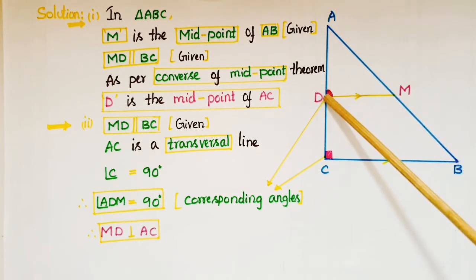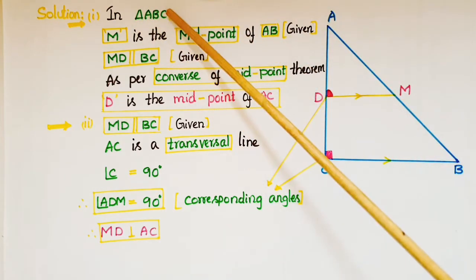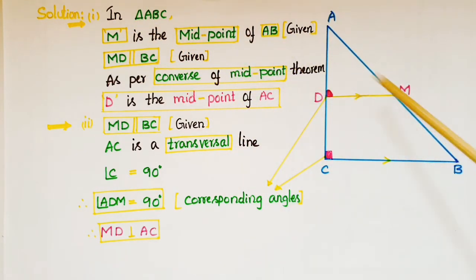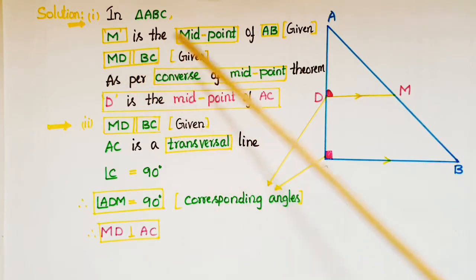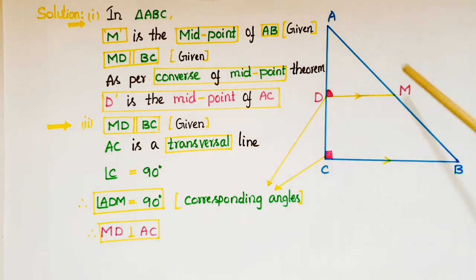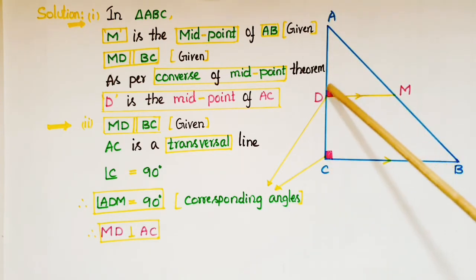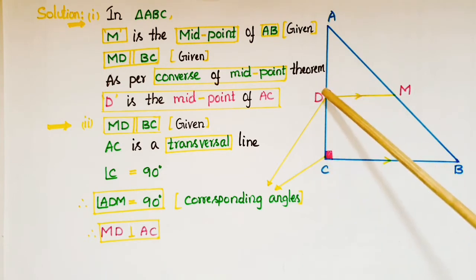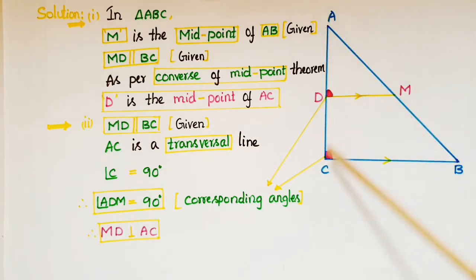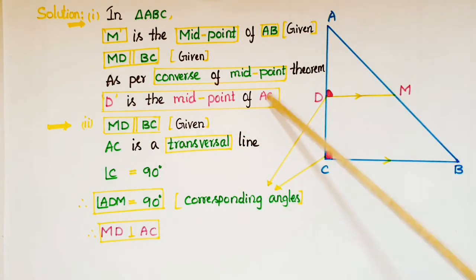We have to prove that D is the midpoint of AC. In triangle ABC, M is the midpoint of AB — that is given — and MD is parallel to BC, which is also given. As per the converse of the midpoint theorem, a line drawn through the midpoint of one side of a triangle, parallel to another side, bisects the third side. So this line bisects AC, meaning D is the midpoint of AC.